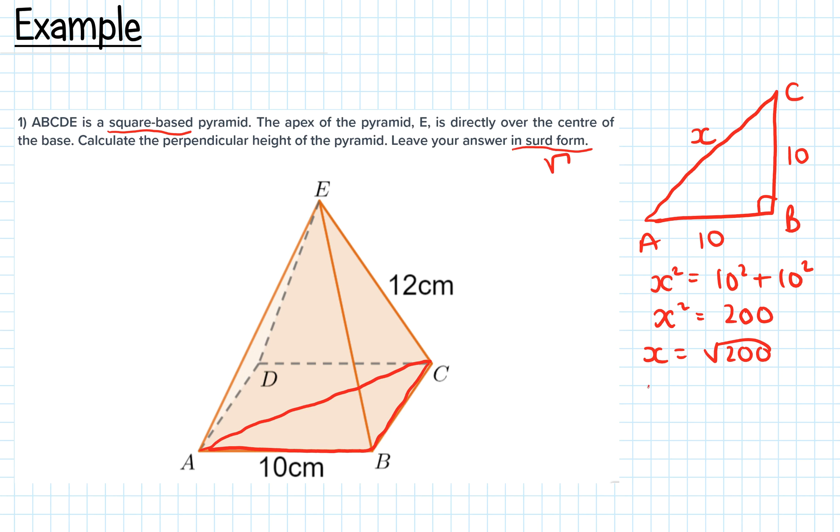If you type √200 into your calculator, it'll simplify it for you and give you 10√2. So this length from A to C, the whole way across, is 10√2.